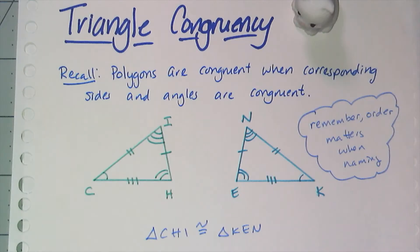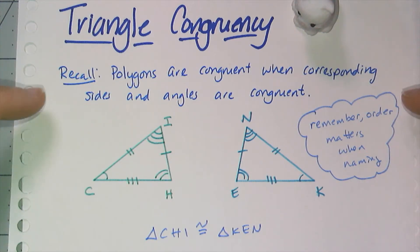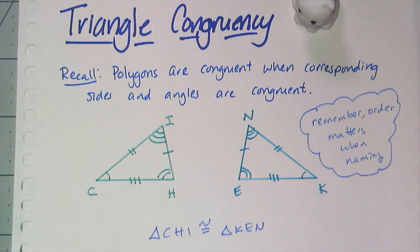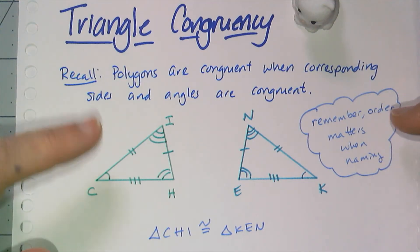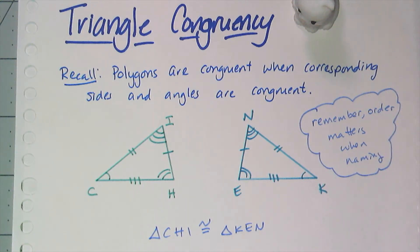In this video, we'll be talking about the triangle congruencies, which are going to seem like a little minor thing in geometry, but you're actually going to use them quite a bit. So let's first recall what it means to be congruent. Polygons are congruent when corresponding sides and corresponding angles are congruent. We talked about this at the beginning of the year when we were naming figures — order matters when you name things because things have to match up.